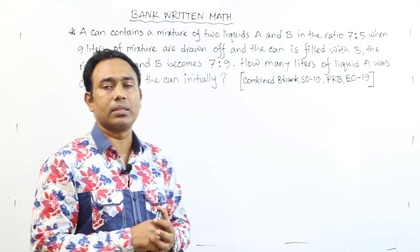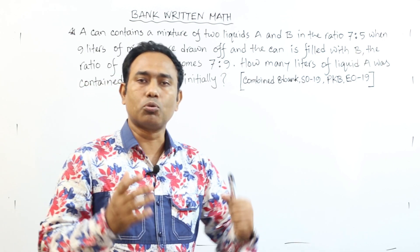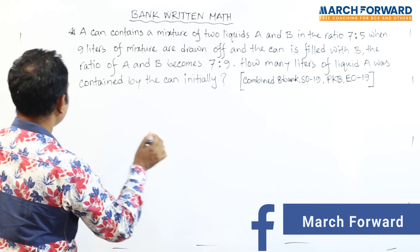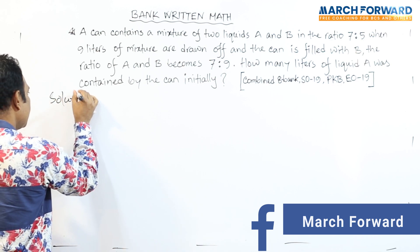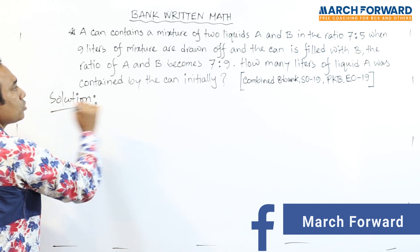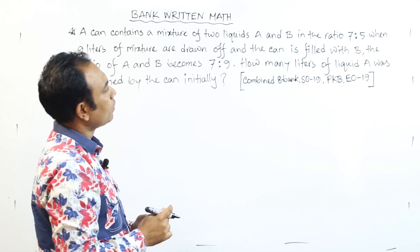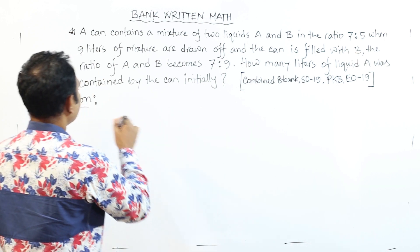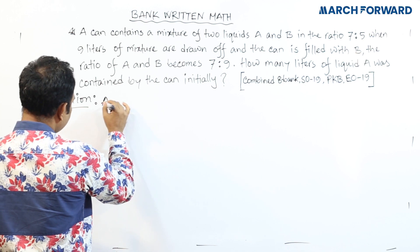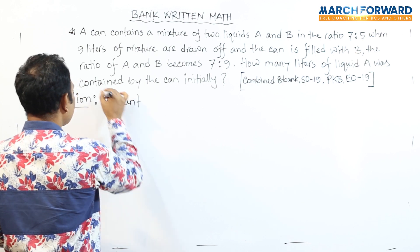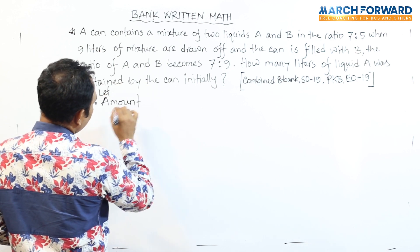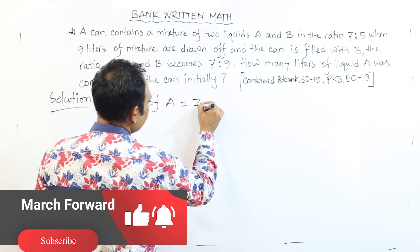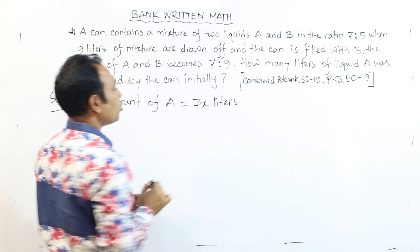Let's look at our solution. First of all, the ratio is 7 to 5. The amount of liquid A, we are using the amount. The amount of liquid A equals 7x liters. We are using the liters.